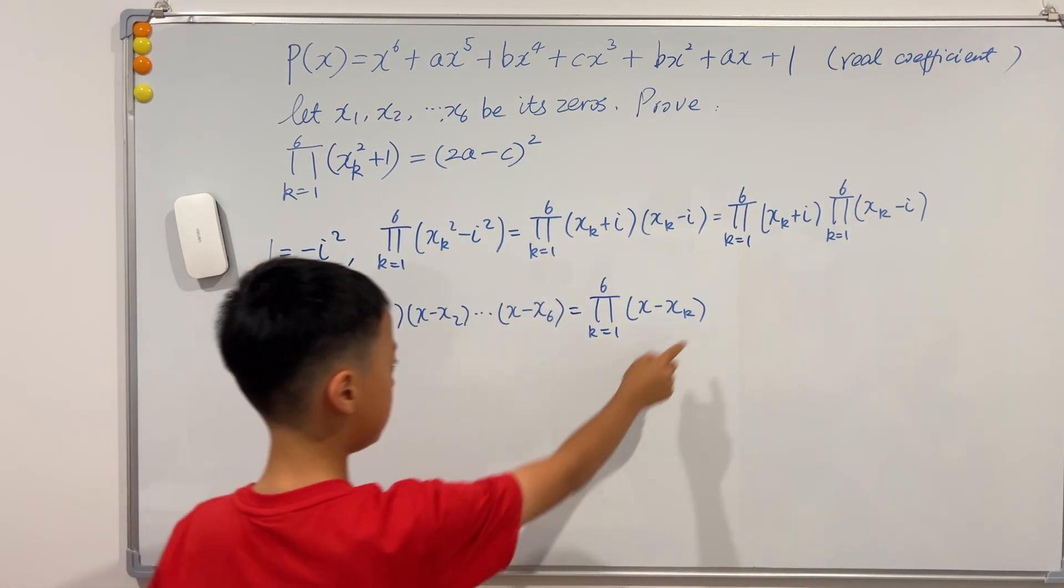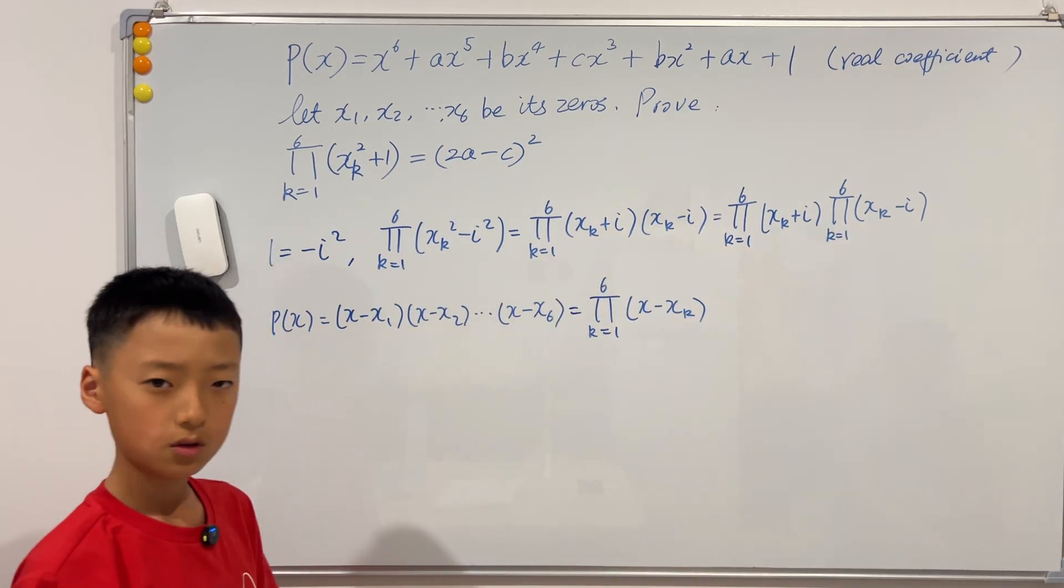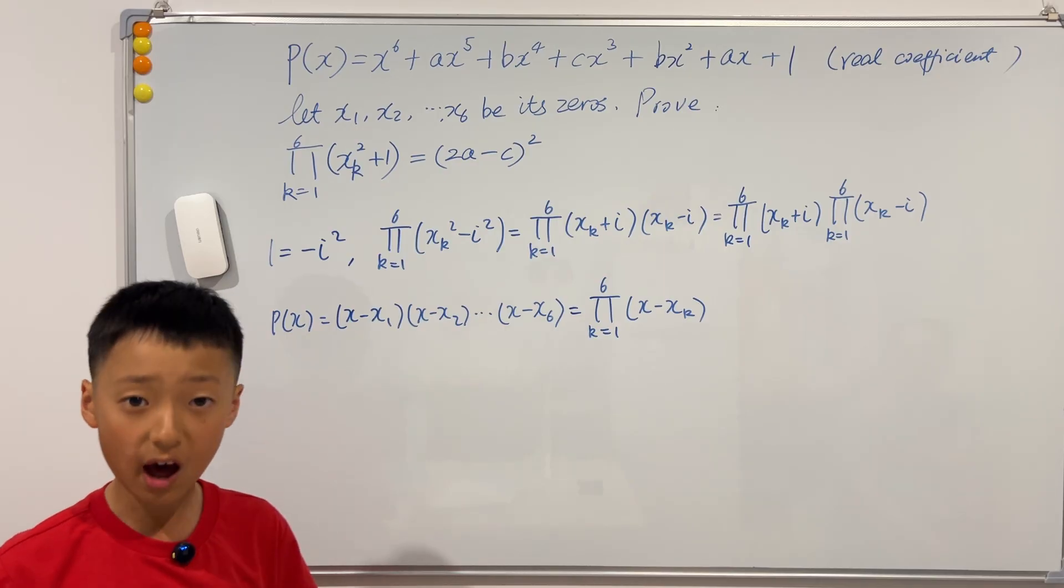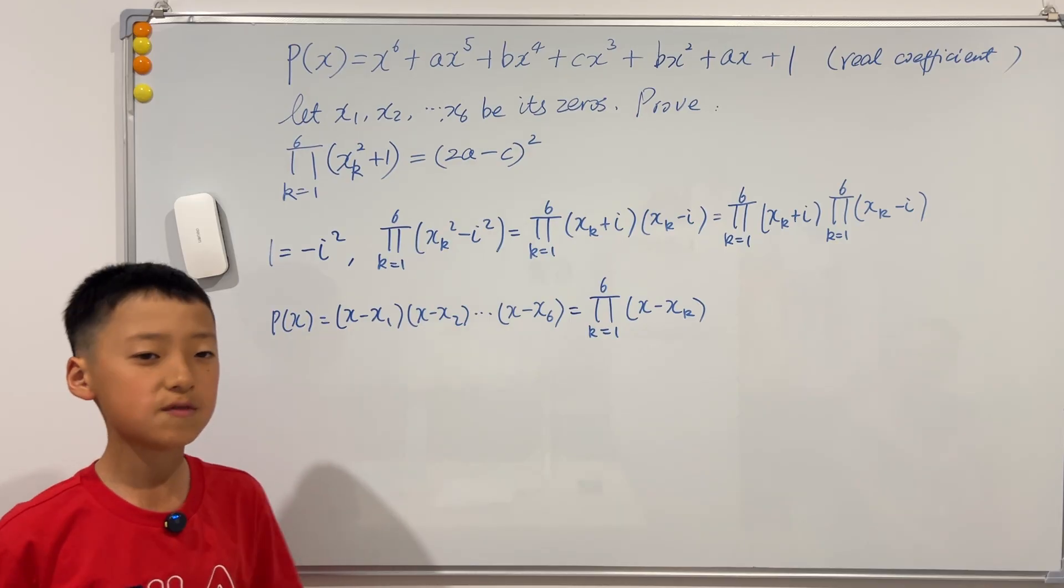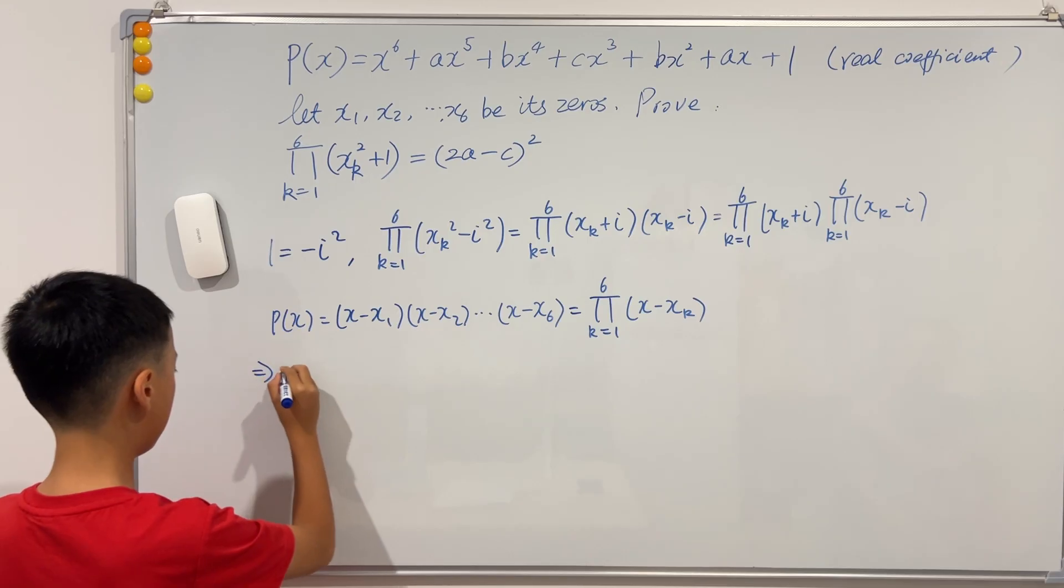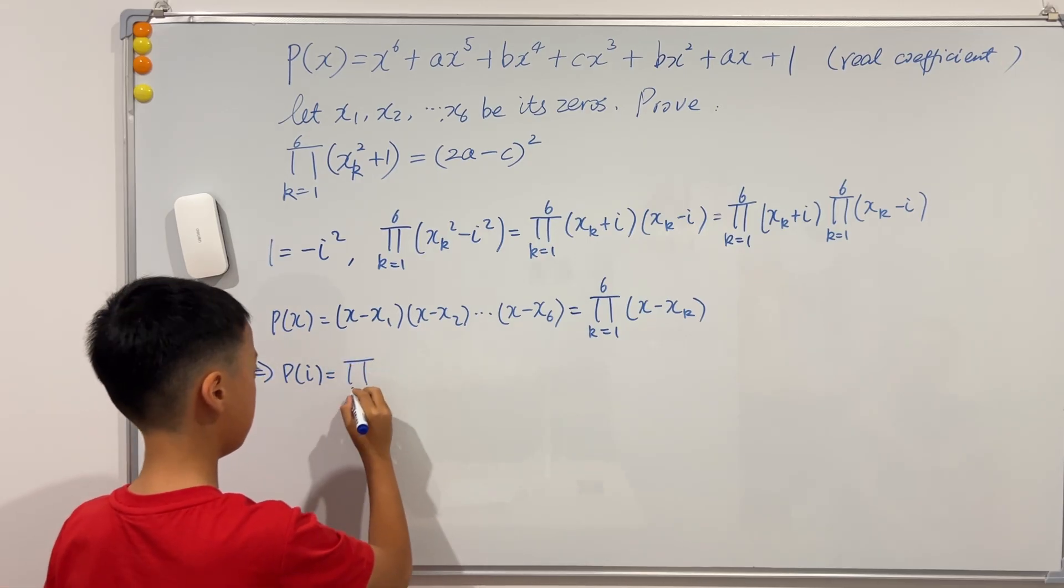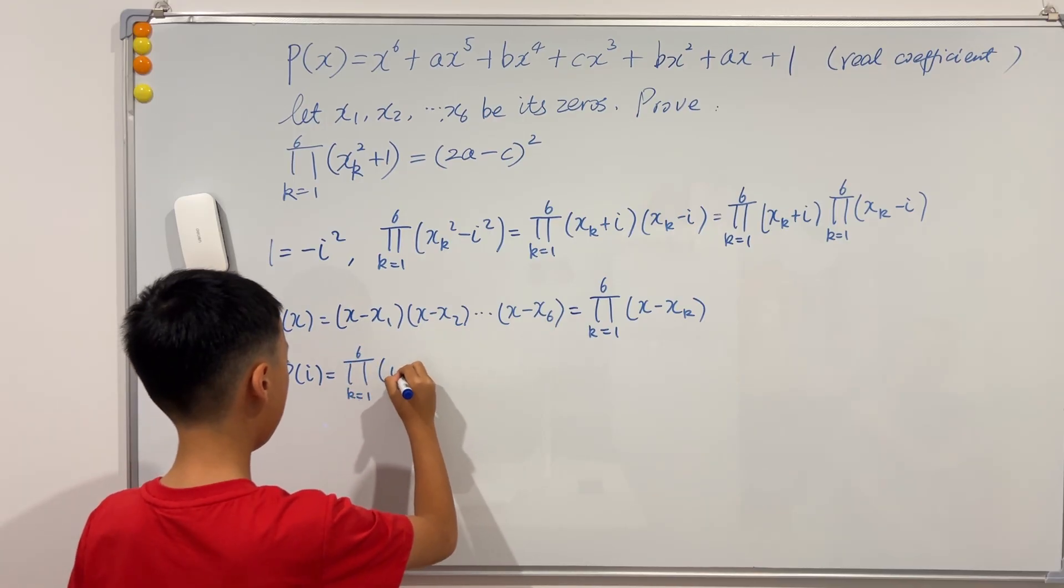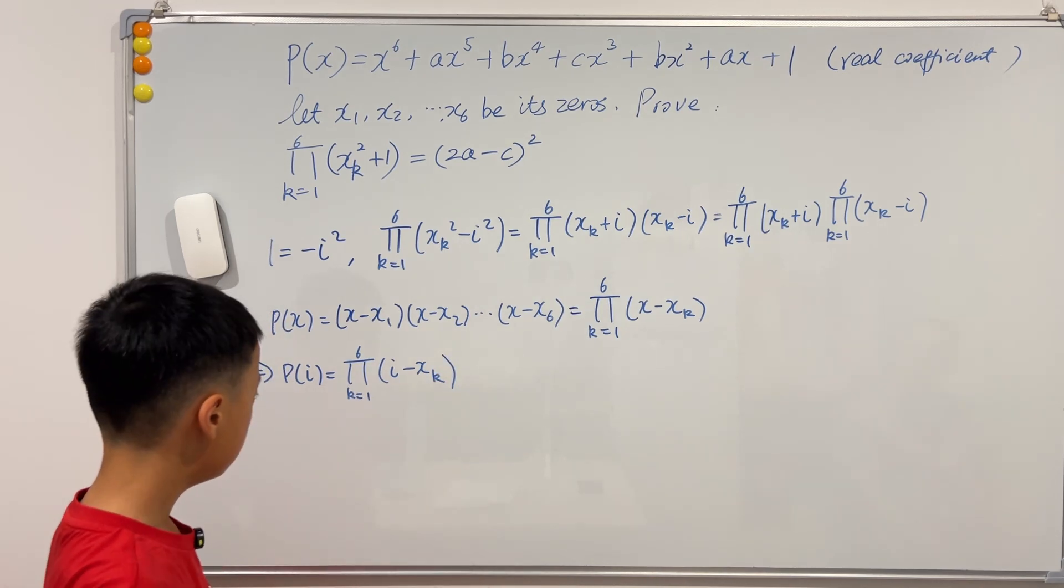And also if you would like, you could write this in capital pi notation. Okay, k goes from one to six of x minus x_k. Now we want to somehow make this similar to one of these capital pi's. Well, how do we do that? Well, why don't we let x to be i, since this is an identity. X equals to anything, even i, will be satisfied. So P of i is equal to capital pi, k goes from one to six, of i minus x_k.